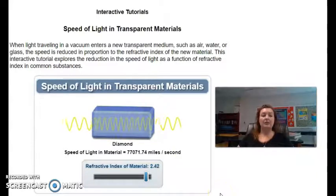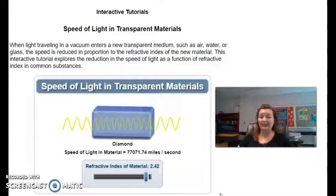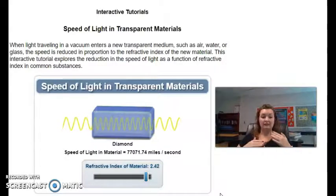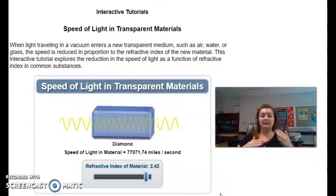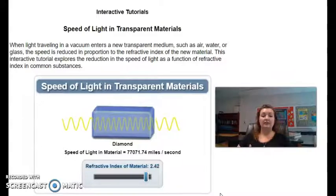So light travels the very fastest through a vacuum, believe it or not. A vacuum being somewhere where there's no particles to get its way at all, like outer space. So the very fastest light's ever going to travel is through outer space or inside a vacuum where there's no particles. The next fastest would be gas, then liquid, then of course solid, and solid would be the slowest.